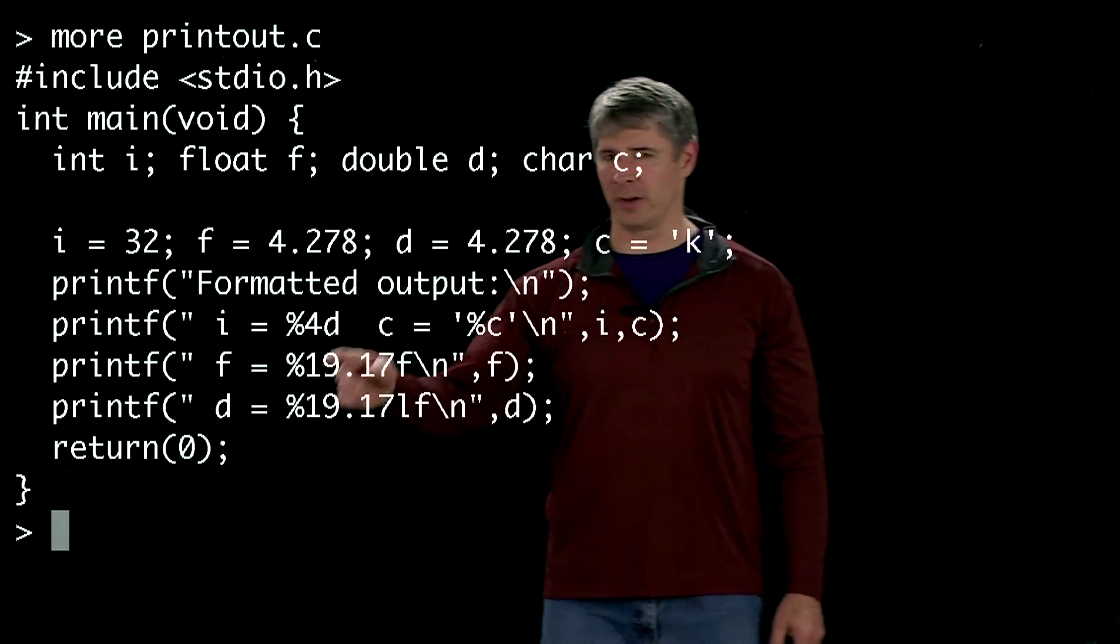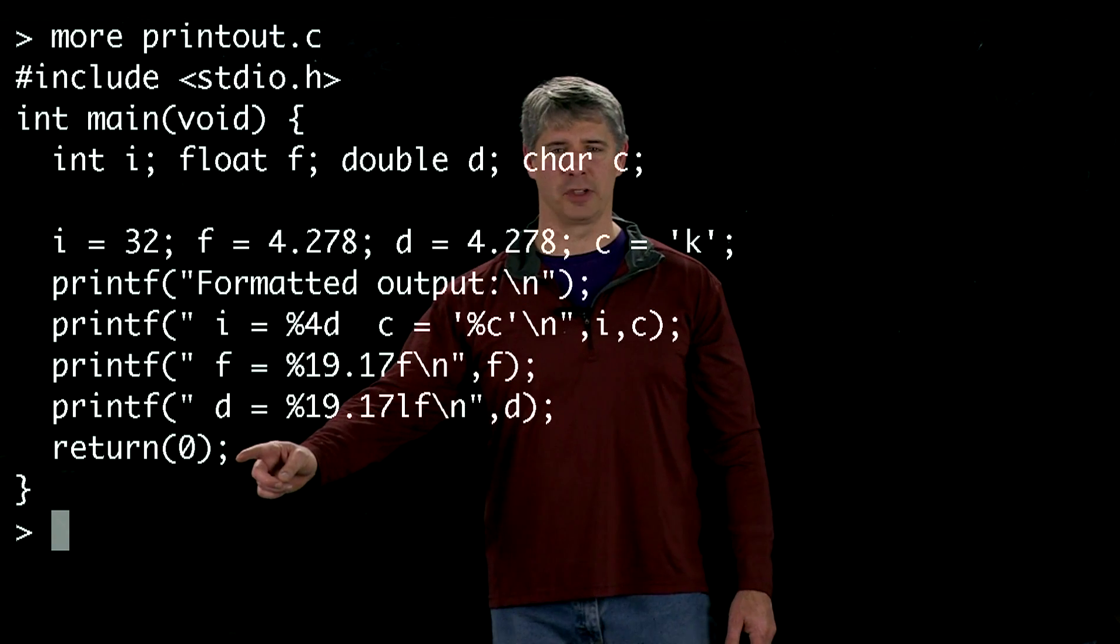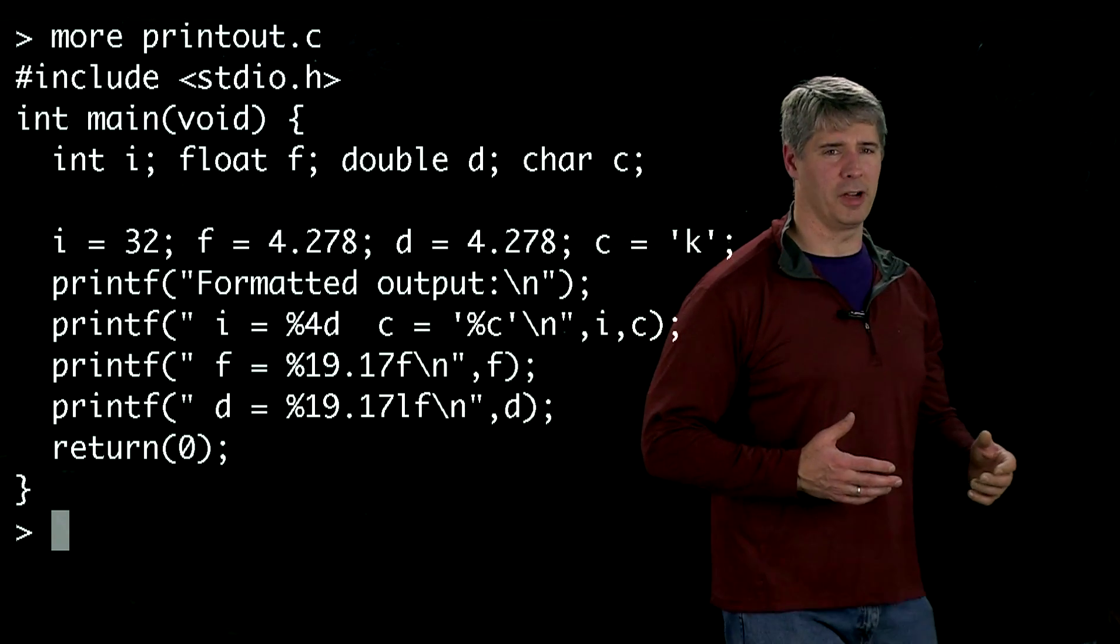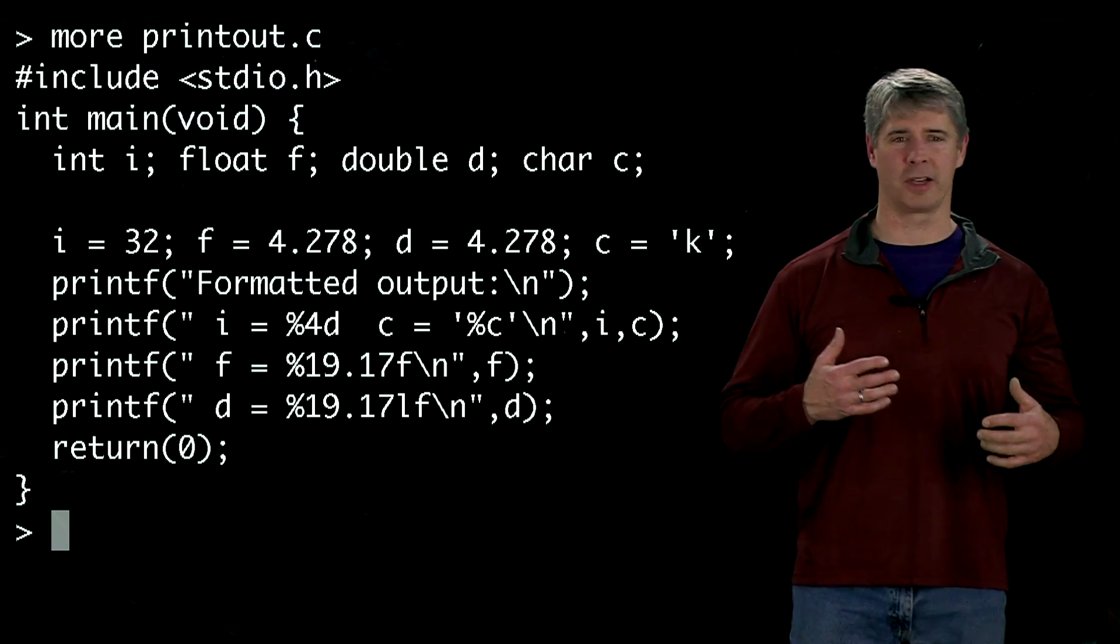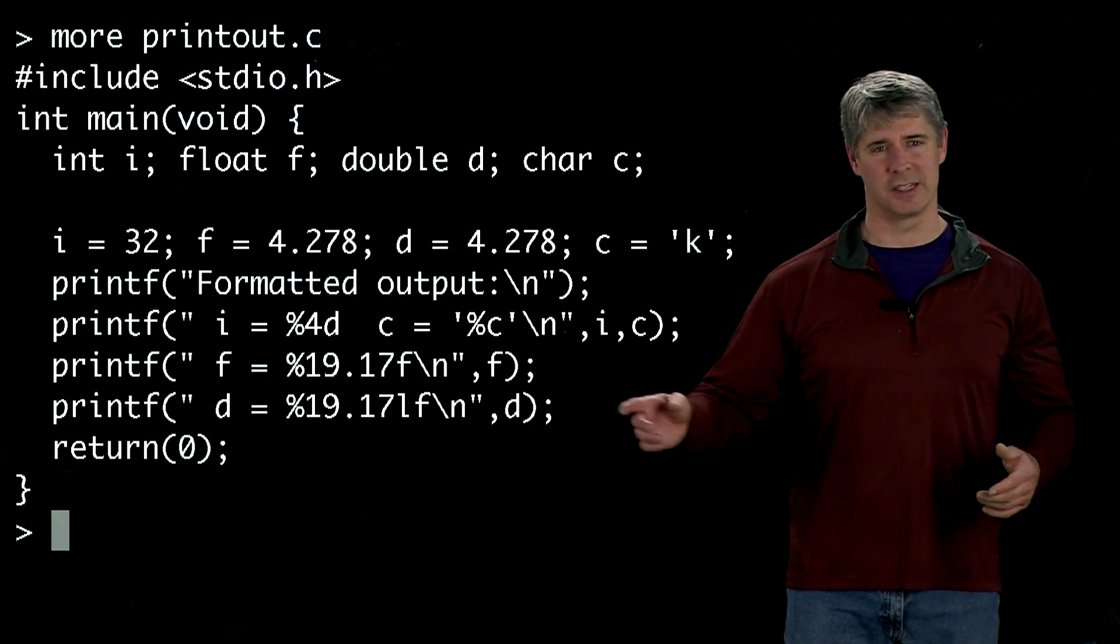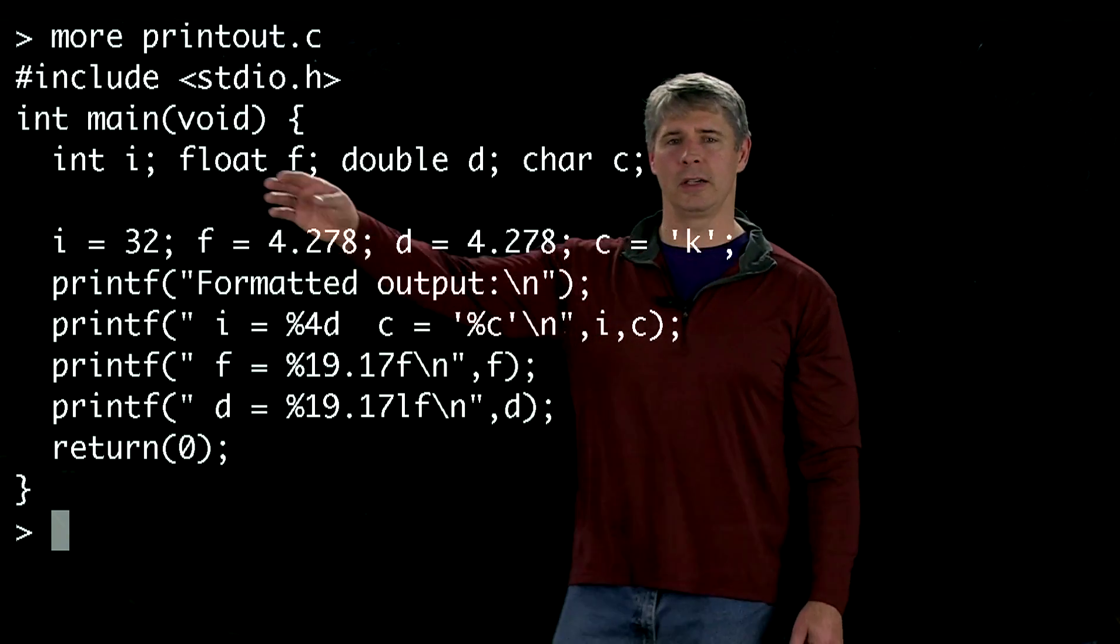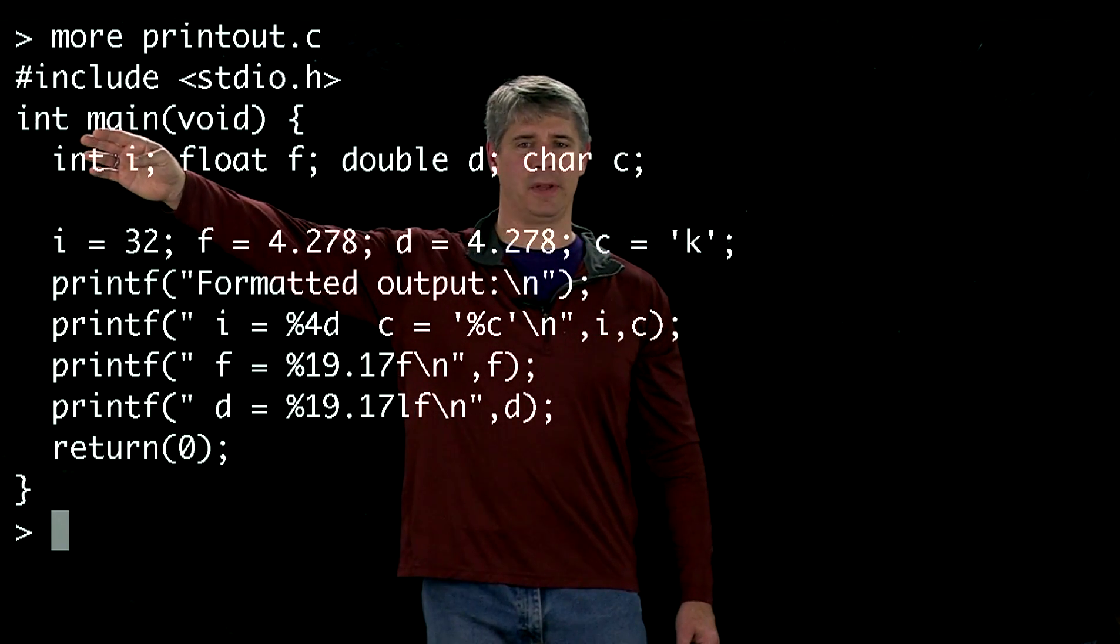What that means is it's going to return an integer when it finishes executing. If you go down here to the bottom, you can see that it returns the value of zero. The reason that main returns a value at all is it's indicating to you whether it completed successfully or not, and zero indicates that it completed successfully.